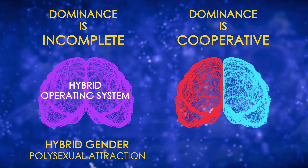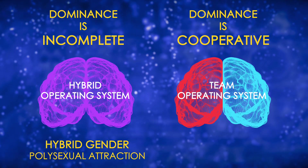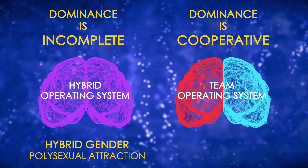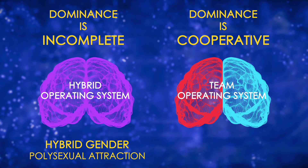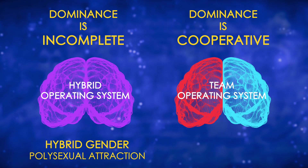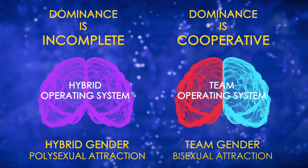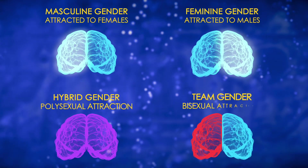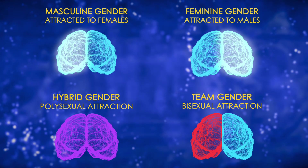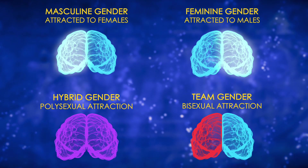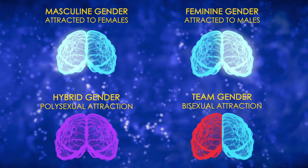Cooperative dominance, called co-dominance, is different in that it triggers the hemispheres to be managed by a team operating system. With a team of systems, our masculine system is dominant and attracted to female bodies, and our feminine system is dominant and attracted to male bodies. When team systems feed the mind, we experience both masculine and feminine gender, and our behavior is bisexual. I refer to this gender variation as team gender. In summary, genetic dominance causes masculine and feminine genders to integrate in two ways. As a consequence, gender exhibits four fundamental variations: masculine gender attracted to female bodies, feminine gender attracted to male bodies, hybrid gender that is polysexual, and team gender that is bisexual.